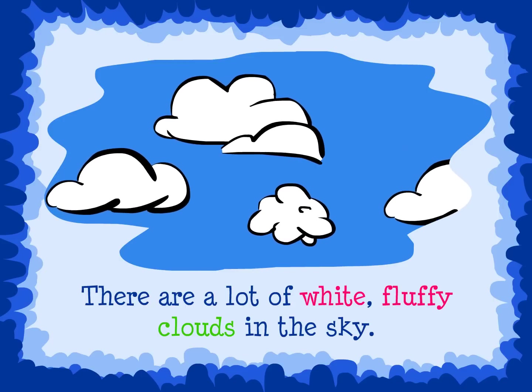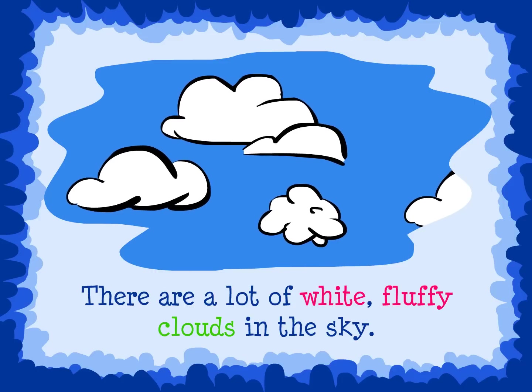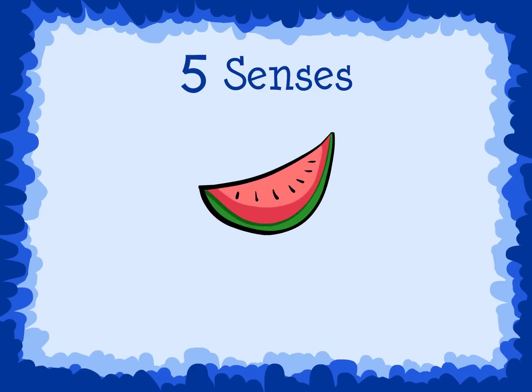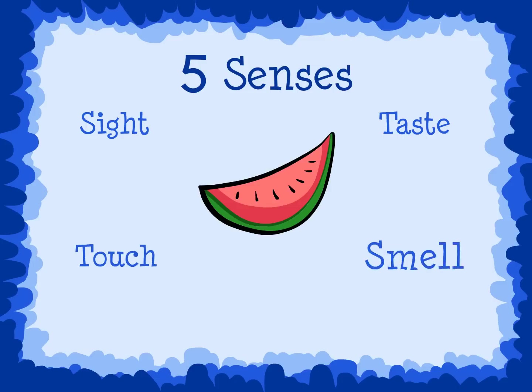A trick to help you think of good adjectives is to use your five senses. Let's look at this picture of a slice of watermelon. Write an adjective for each of the five senses. Think of what the watermelon looks like, what it may taste like, feel like, smell like, and sound like.